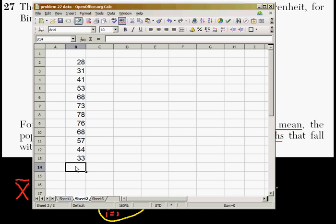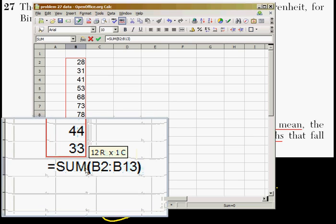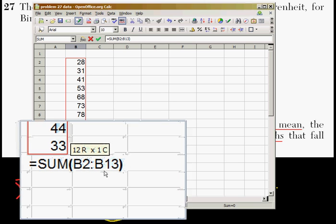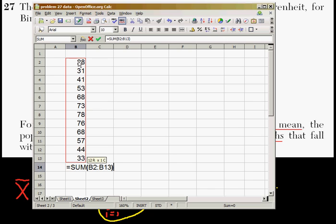So to find the mean, what we're going to do is add up all these numbers. So I press the equal sign, and then I type in sum for sum. I put a parenthesis. And then what I'm going to do is select from 28 all the way down to 33, all 12 data points. And then I will close my parenthesis.